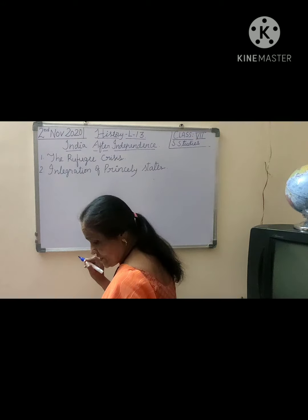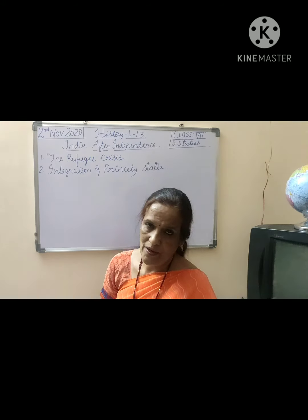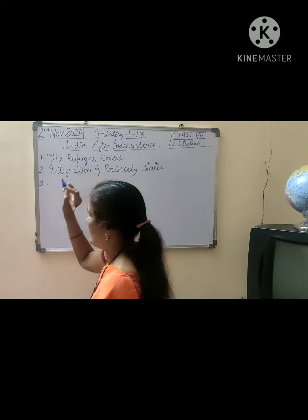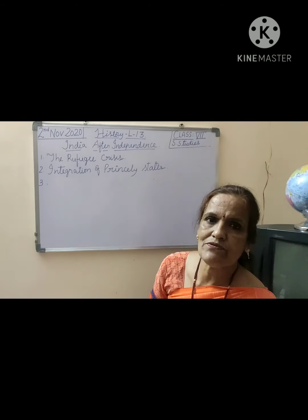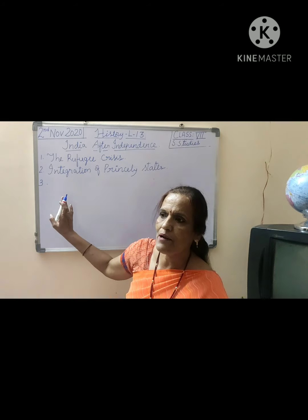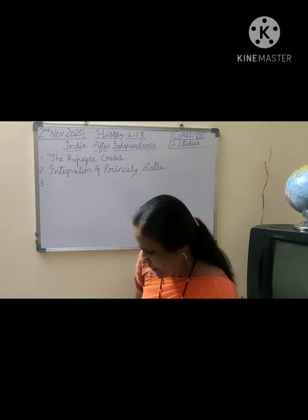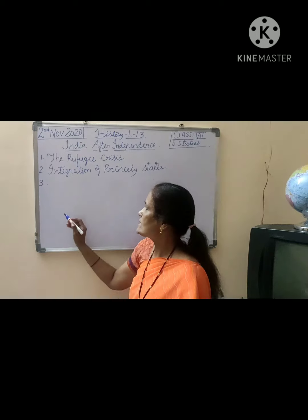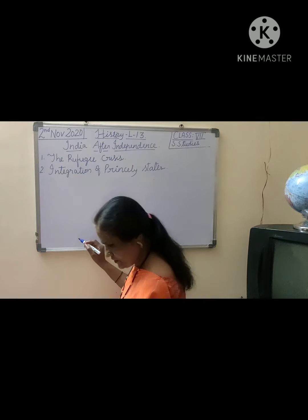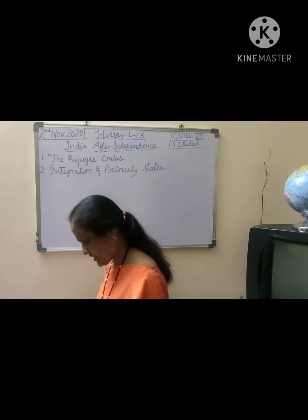The second major problem was the integration of princely states. There were 562 states which were later merged. We Indians decided we will unite, and this was done by Sardar Vallabhbhai Patel, the Iron Man of India. However, only three states were not ready to join — Junagadh, Hyderabad, and Kashmir.